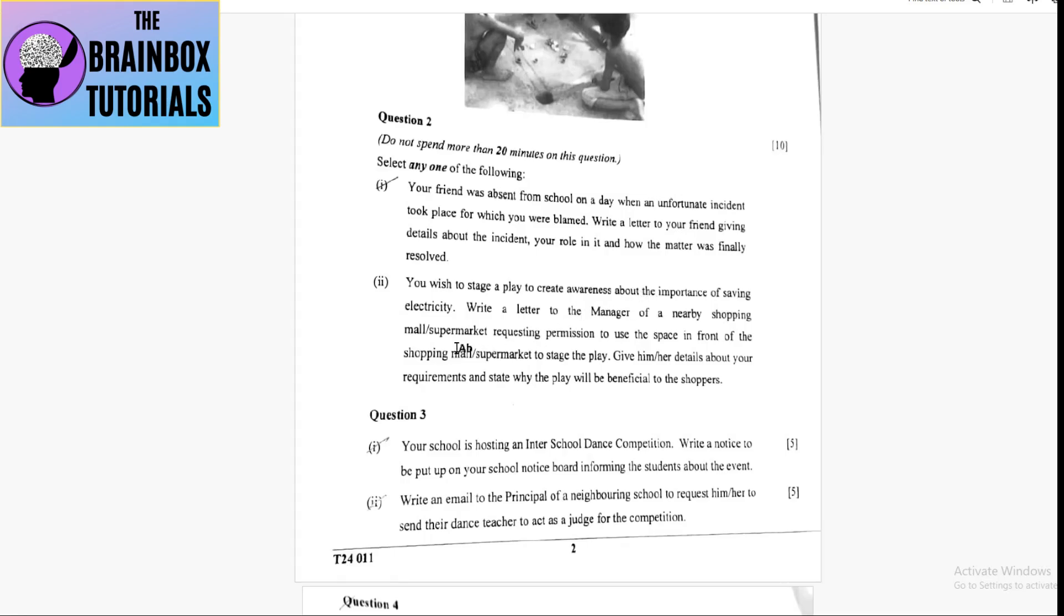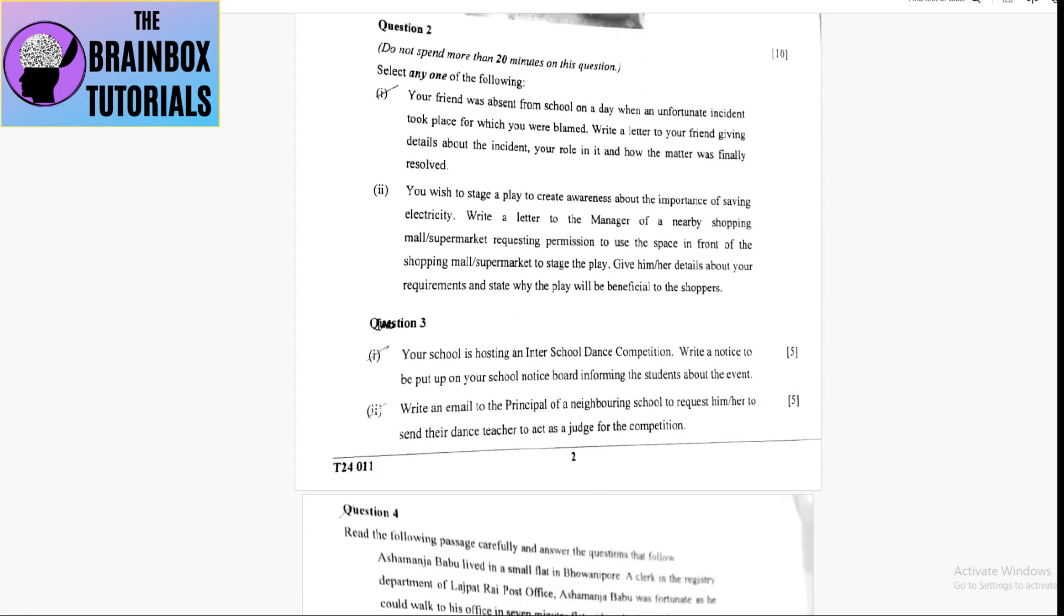Second one is formal: you wish to stage a play to create awareness about the importance of saving electricity. Write a letter to the manager of a nearby shopping mall requesting permission to use the space in front to stage the play.